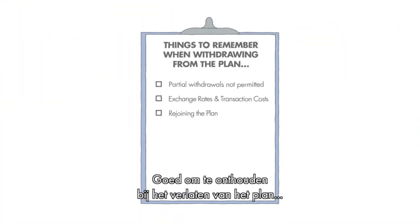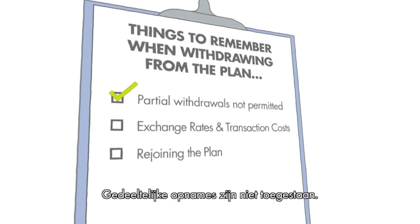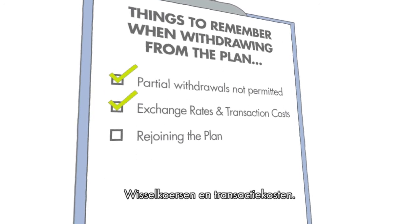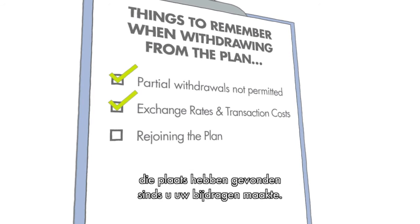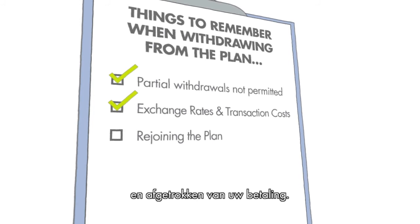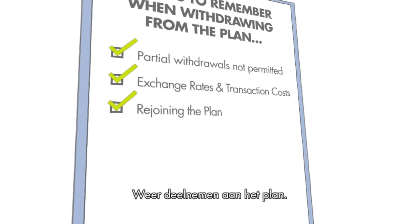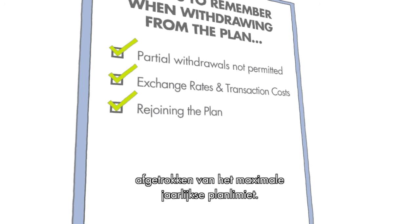Things to remember when withdrawing from the plan. Partial withdrawals are not permitted. Exchange rates and transaction costs: when you request a refund, you bear the risk of any exchange rate fluctuations that may have taken place since making your contributions. Any transaction costs will also be paid by you and deducted from your payment. Rejoining the plan: if you rejoin the plan in any year in which you have already withdrawn, the amount you withdrew will be deducted from the maximum annual plan limit.